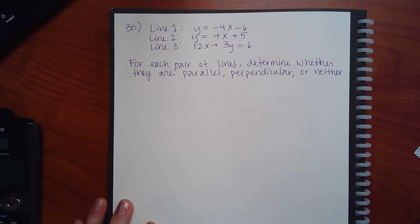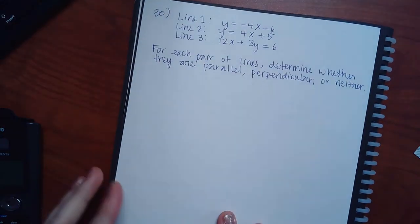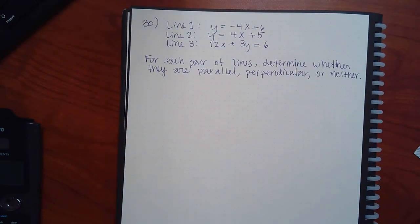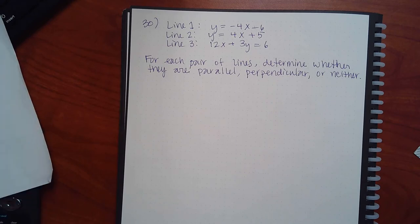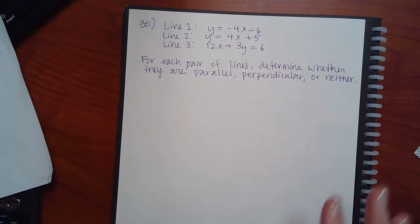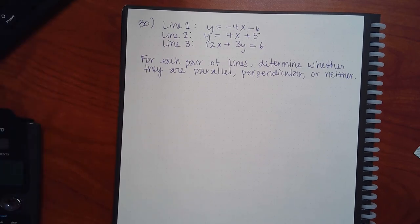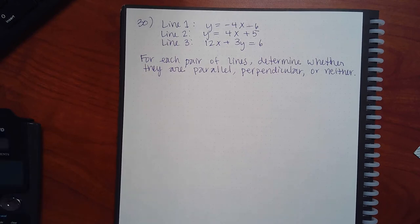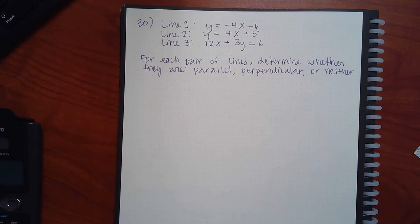Now we're getting to the good one. For this problem, they give us three lines and we have to determine if each pair is parallel, perpendicular, or neither. The answer will be in a chart format: line one and line two, line two and line three, and line one and line three. For each pair you'll choose: parallel, perpendicular, or neither.